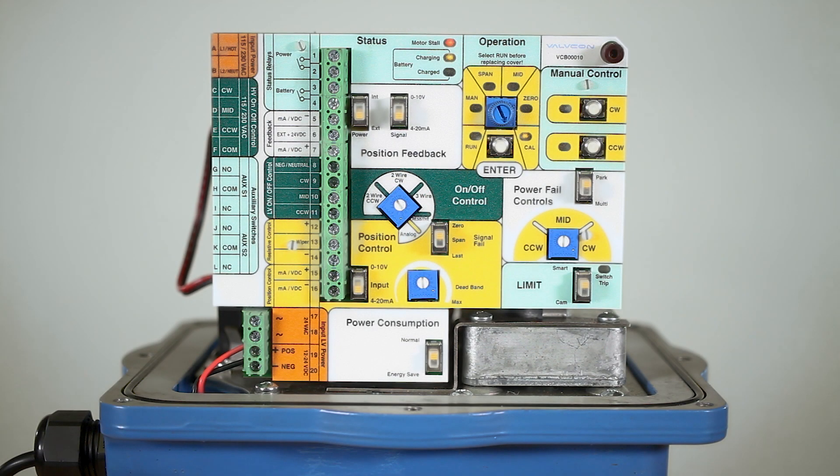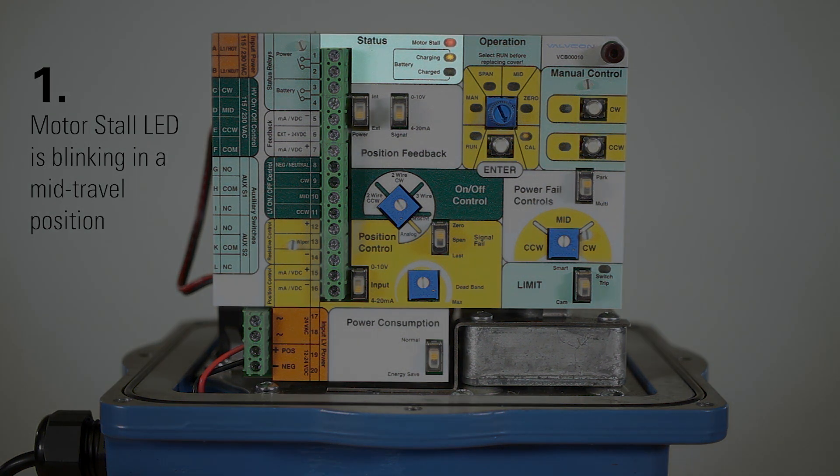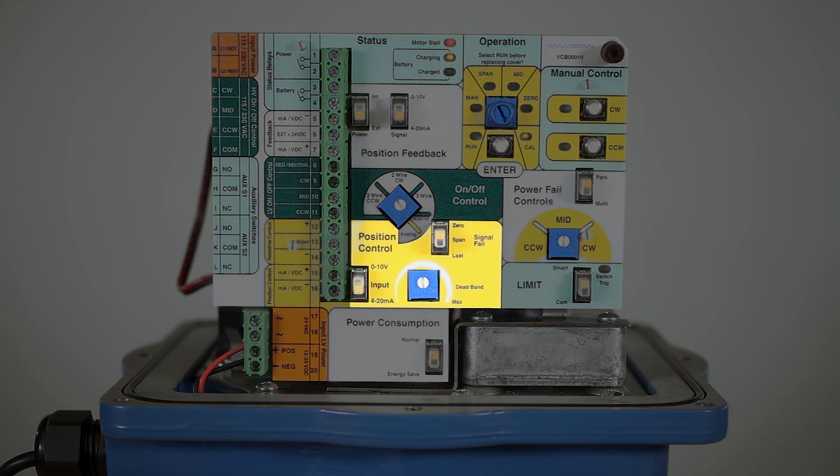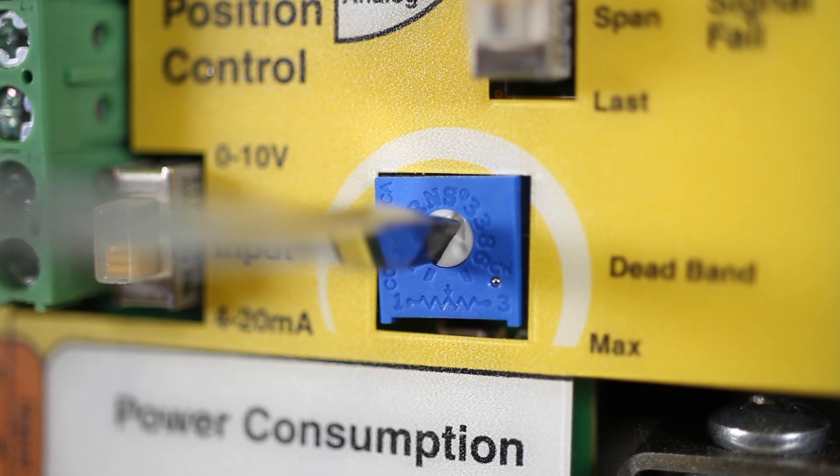If your motor stall LED is blinking in a mid-travel position, this may be due to the ValveCon hunting for signal. To correct this, increase the actuator deadband setpoint by rotating the dial clockwise.